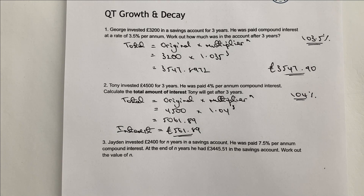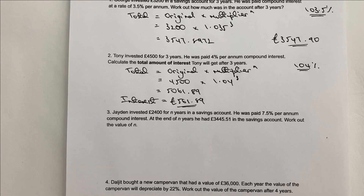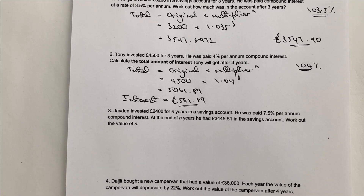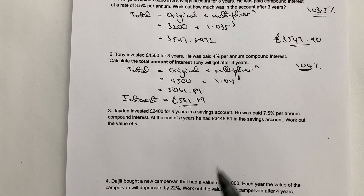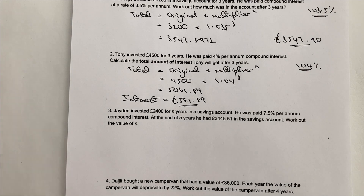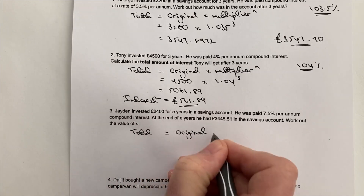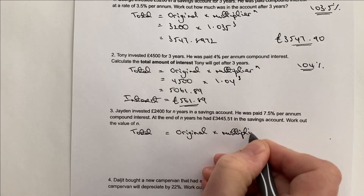Hopefully that's all right. I'm going to do question number three now, and then questions four through to six I'm going to do on the next video in this particular playlist. This is Jaden. Jaden invested £2,400 for N years in a savings account and he's paid 7.5% compound interest. At the end of the number of years he's got a specific amount of money. What's the value of N — in other words, how many years has he actually left the money in the account? As before, I would use: total equals original times multiplier to the power of N.